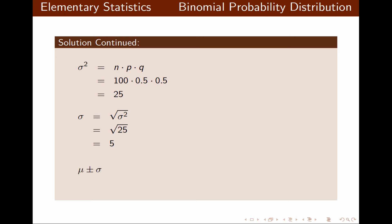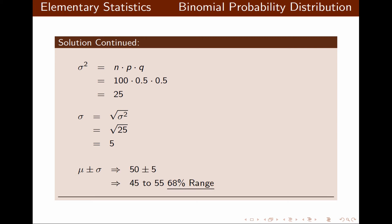The 68% range according to the empirical rule is mu plus or minus one standard deviation, so the answer is from 45 to 55 — that would be our 68% range.